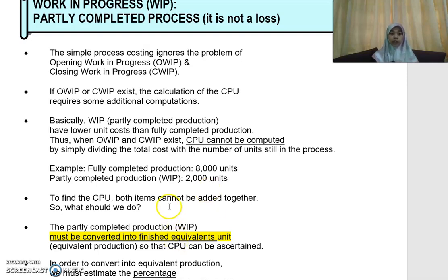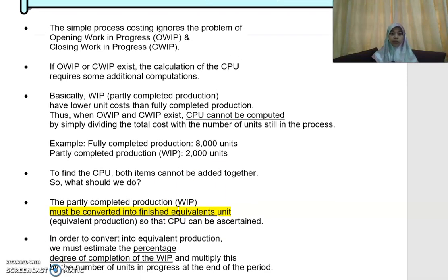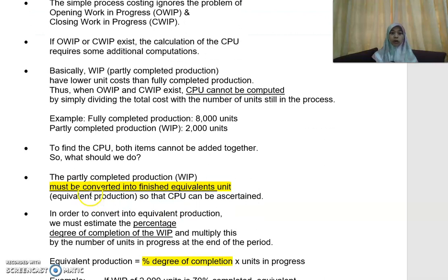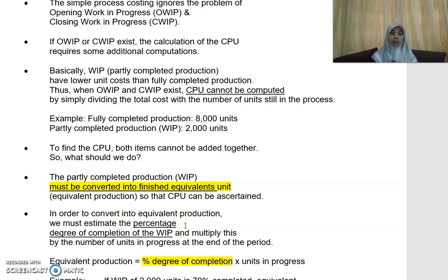So what should you do if you have this scenario? What you need to do is convert that work in progress into finished equivalent units. In other words, you have to convert that into equivalent production so that you can then determine how much the cost per unit is. In order to do that, you must estimate the percentage of completion or degree of completion of your work in progress.